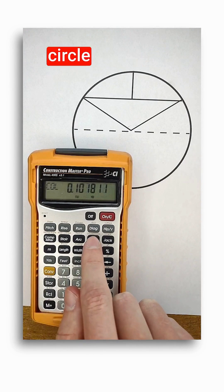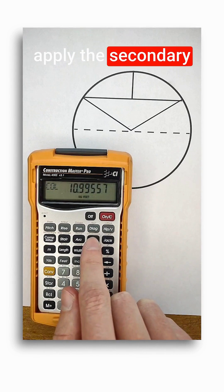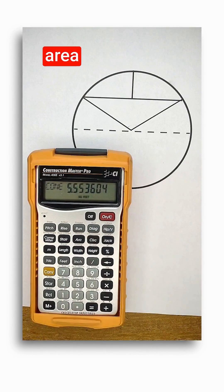Lastly, pushing convert before the circle button will apply the secondary function for columns and cone surface area and volume.